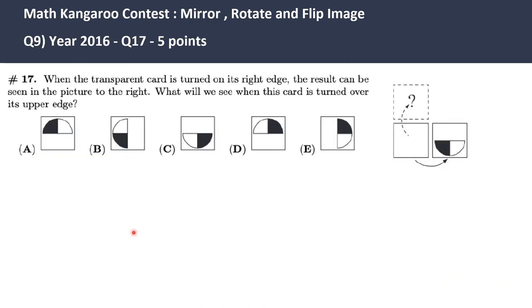Let's look at one more question here. Question 17 for year 2016. When the transparent card is turned on its right edge, the result can be seen in the picture to the right. So it seems the transparent card was here, it was turned to the right edge, and this is how the mirror image looks like. What will we see when this card is turned over to its upper edge?